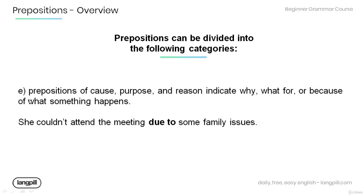E: Prepositions of cause, purpose, and reason indicate why, what for, or because of what something happens. Have a look at the example below: she couldn't attend the meeting due to some family issues. The prepositions 'due to' tell us why she couldn't attend the meeting.